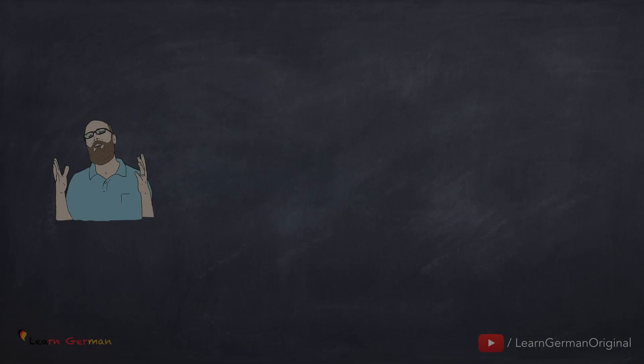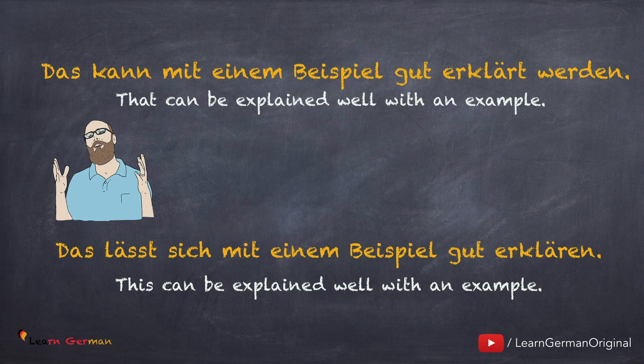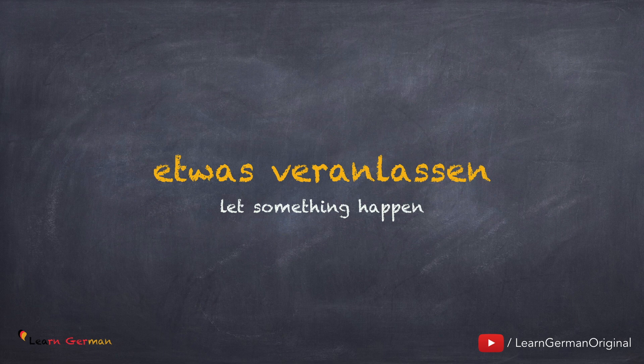Passivsätze mit können kann man leicht mit sich lassen umformulieren. Zum Beispiel: das kann mit einem Beispiel gut erklärt werden. Man kann auch sagen: das lässt sich mit einem Beispiel gut erklären. Man soll hier nicht vergessen, dass das Verb am Ende im Infinitiv steht. Diese Konstruktion darf man aber nicht mit der anderen Konstruktion sich lassen plus Infinitiv verwechseln.